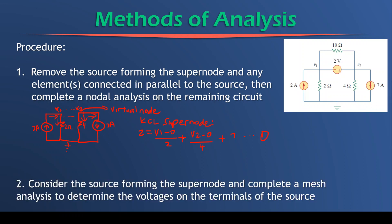And the second step is to consider the source forming the supernode and to do a mesh analysis on the voltages to get the voltages on the terminals of the source. So what is the source forming the supernode? That's the 2 volt source that's connected between terminals V2 and V1. Now, if we do a mesh analysis here, we can quite simply say